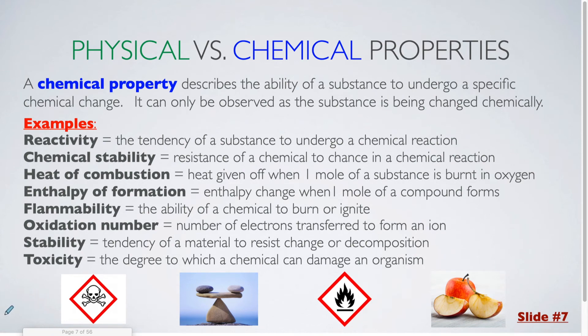Next up we have chemical properties. Chemical properties describe the ability of a substance to undergo a specific chemical change, and these can only be observed as the substance is being changed chemically. So a few examples of that. Reactivity: the tendency of a substance to undergo a chemical reaction. Some chemicals are extremely stable, and they're not going to really change in any way if you let them sit out. Other chemicals could be potentially photosensitive, so maybe they break down in the presence of light. That's also related to chemical stability. So the resistance of a chemical to change in a chemical reaction.